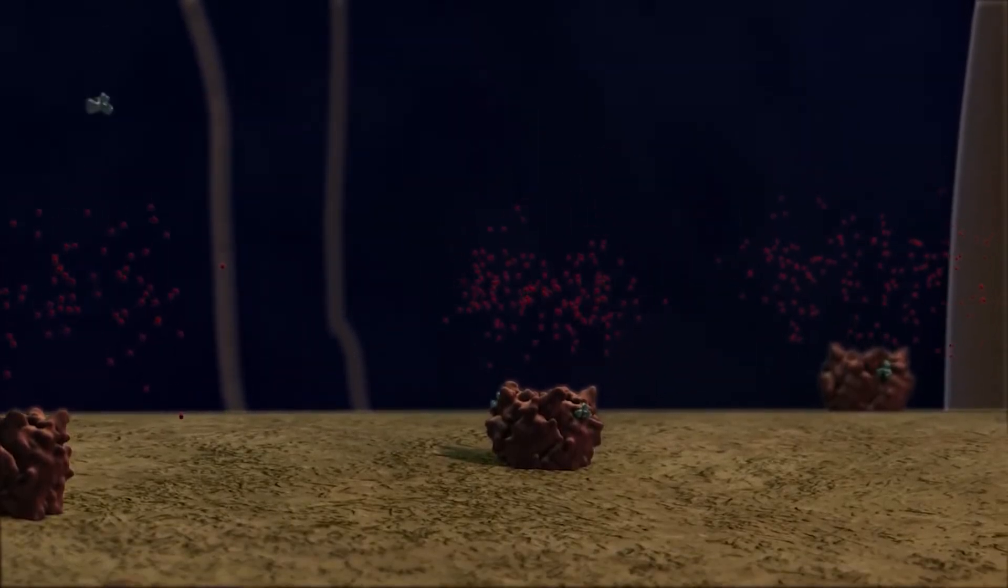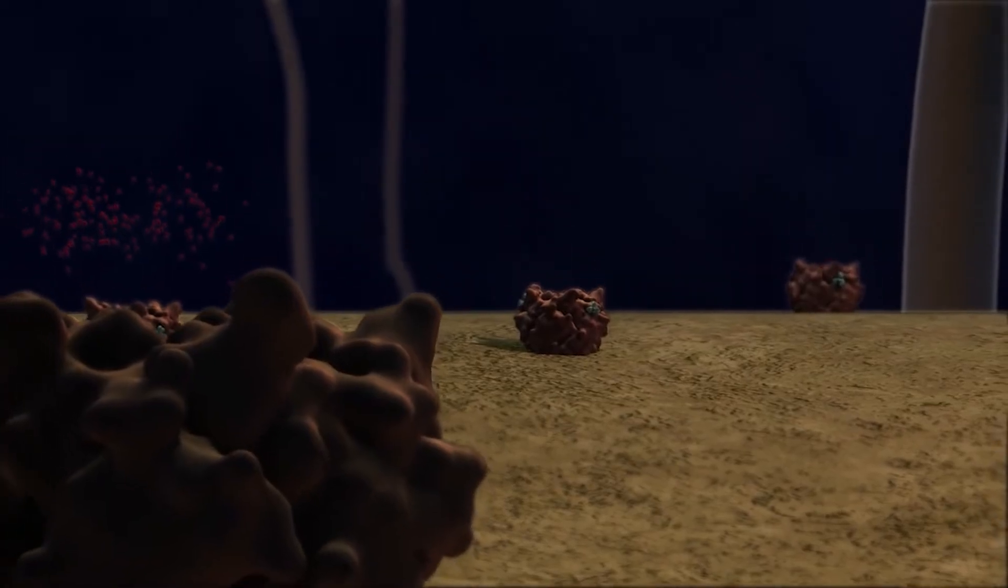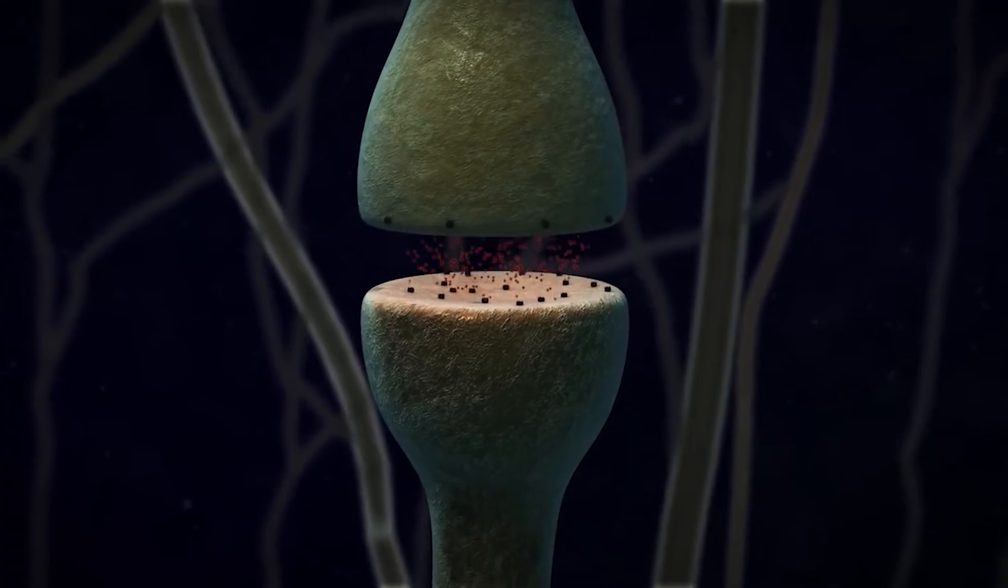They're picked up by the postsynaptic neuron when they activate many tiny receptors designed for that very purpose. And if enough are activated, an action potential begins in the next neuron, and so the message is passed on.